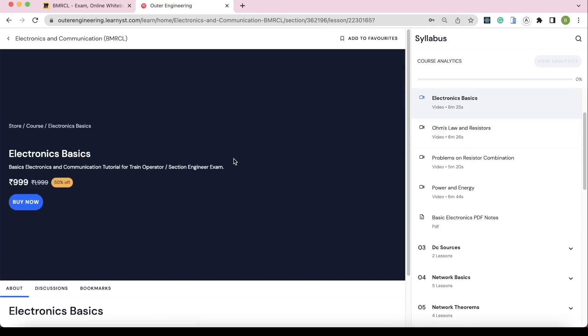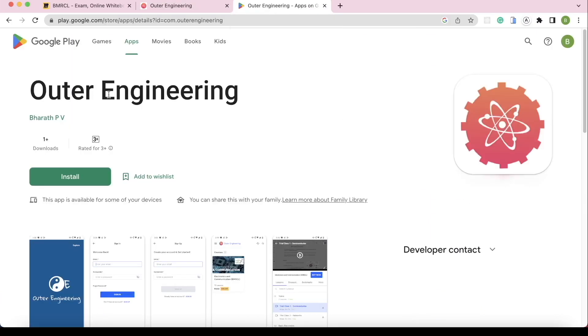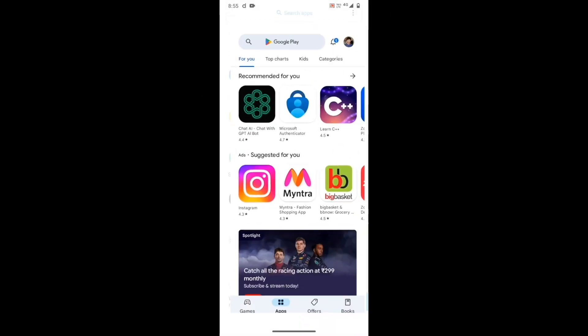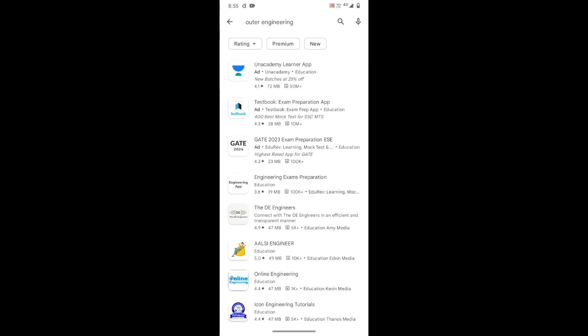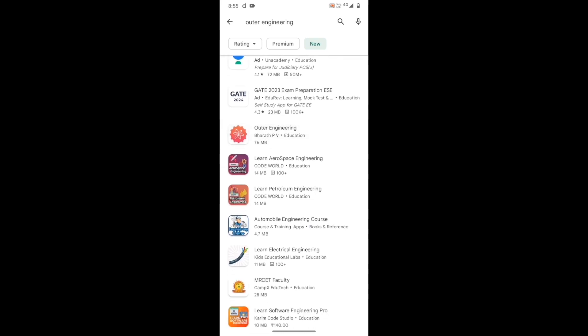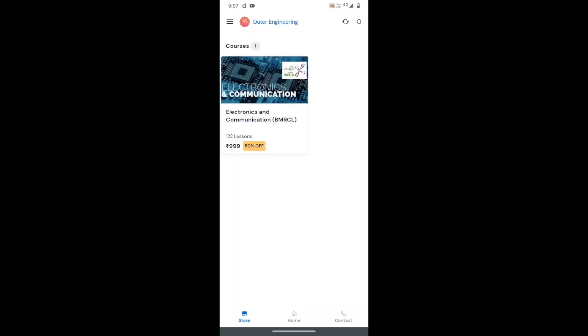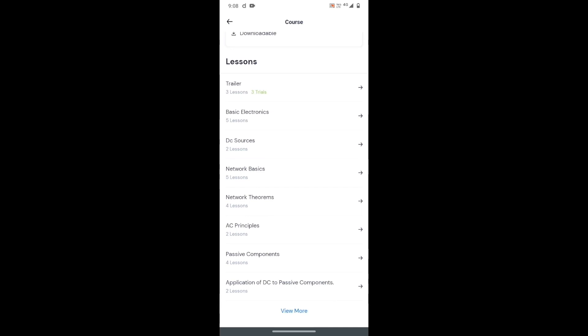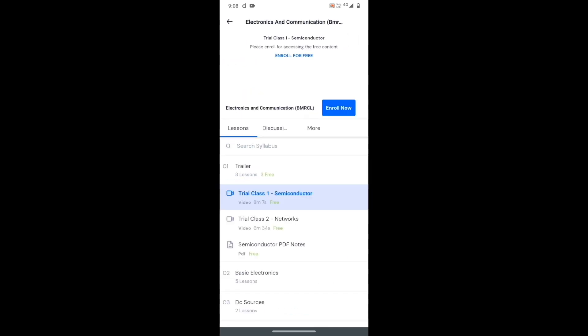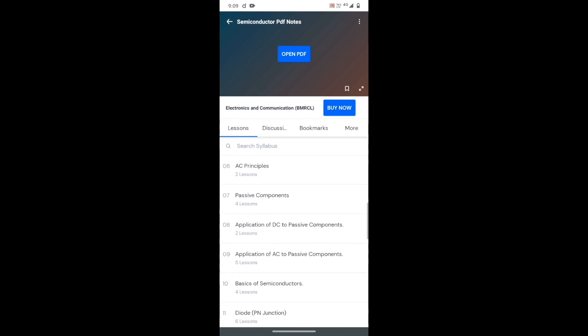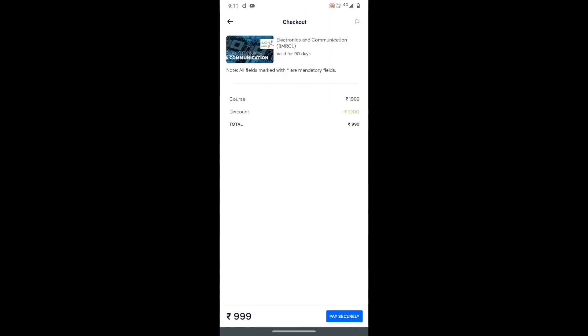If you like the content list, click Buy. We have an Android app called Outer Engineering, so you need to install it on mobile. Just go to Play Store, type Outer Engineering. We have an app, click and install. The app is open. You need to find Electronics and Communication in BMRC. Click scroll and view. First time user, you can enroll in the app. We will cover all the basic Electronics and Communication topics. You can click Buy and purchase.